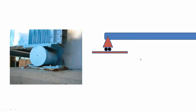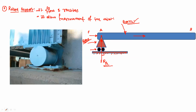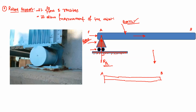When we draw the free body diagram, we show the free movement of beam AB. At point A we show only one reaction which is RA. This is the representation of the roller support and the free body diagram.